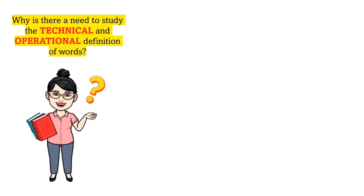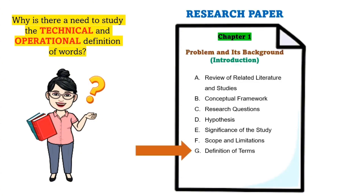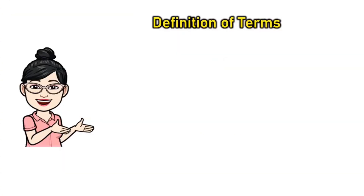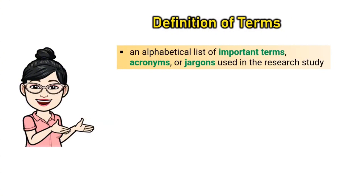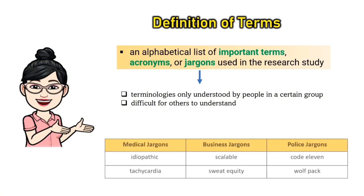You will need the skills of defining words when you are writing a research paper. In fact, definition of terms is part of chapter 1 of a research paper. Definition of terms is an alphabetical list of important terms, acronyms, or jargons used in the research study. Jargons are terminologies only understood by people in a certain group and are difficult for others to understand. Here are some examples of jargons or special words in a particular field.